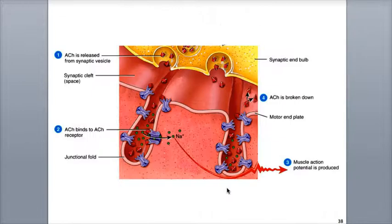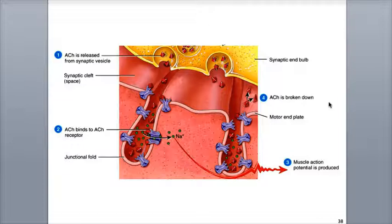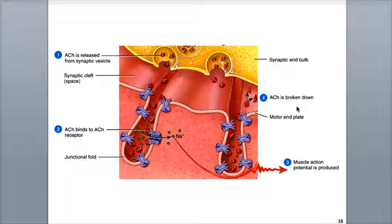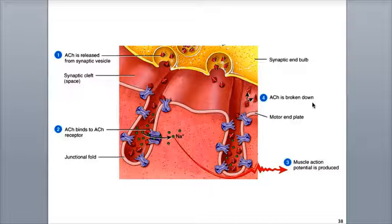The binding of acetylcholine to the receptor proteins is short-lived due to the breakdown of acetylcholine by an enzyme found in the synaptic cleft called acetylcholinesterase, abbreviated AChE. Acetylcholinesterase breaks down acetylcholine into its separate products, neither of which can trigger a muscle action potential.